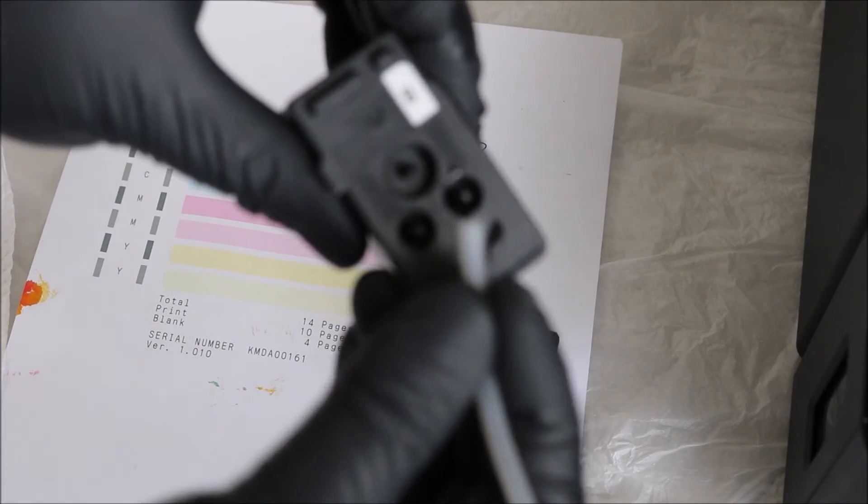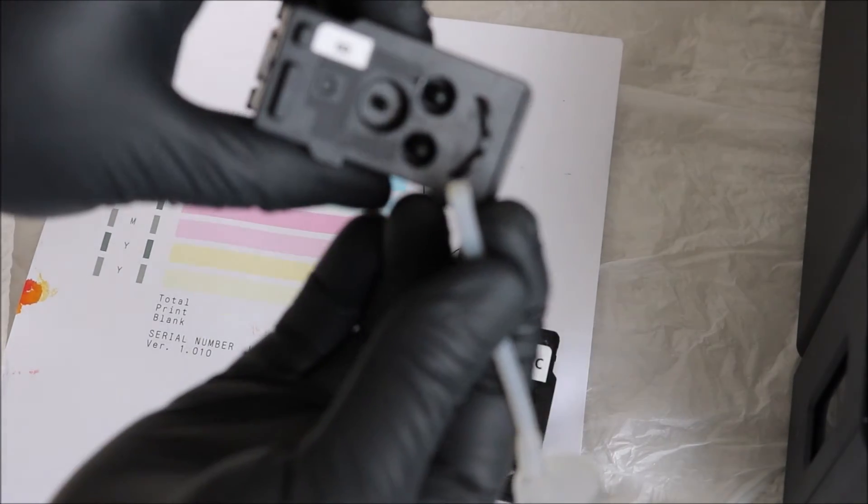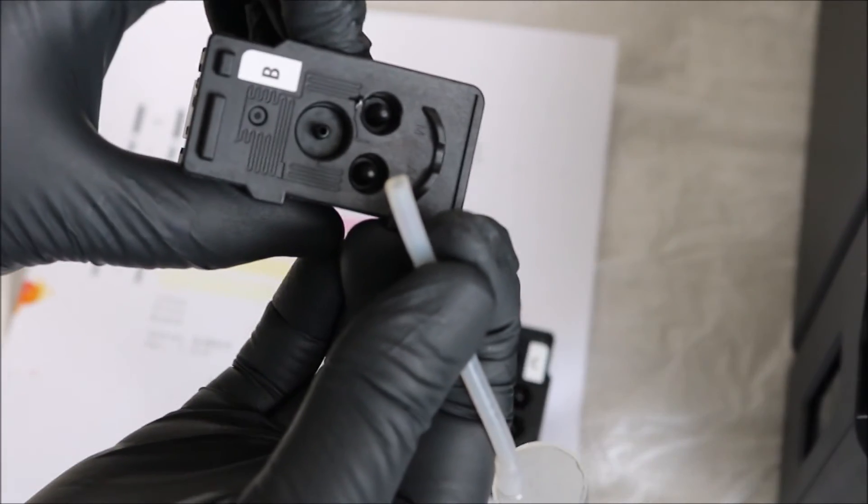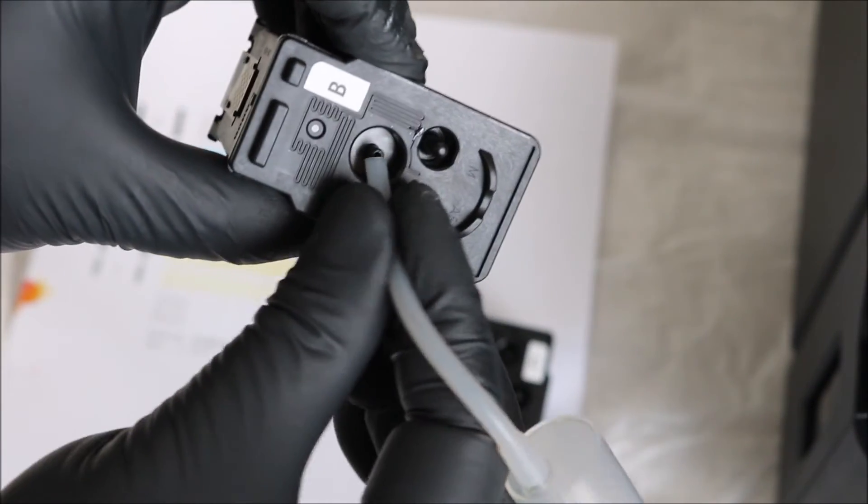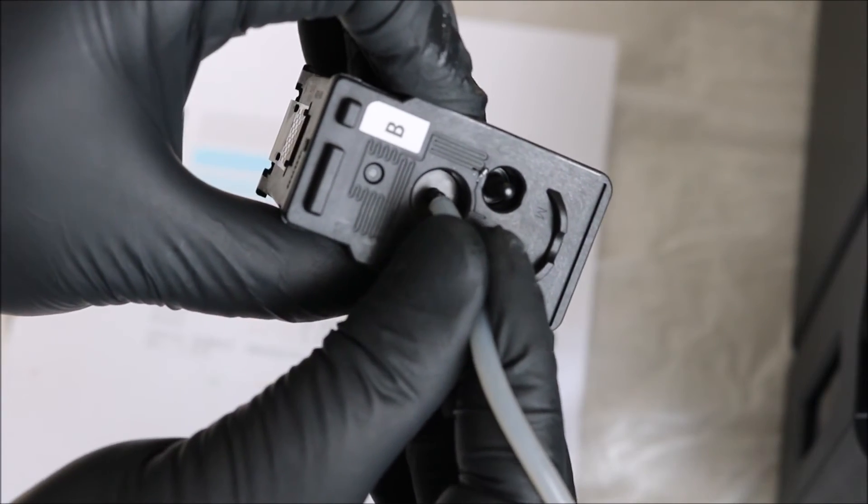So the black one is very, very simple. It's just one nozzle and the one nozzle is going to be black. And again, you can do the same process with the black print head. It's the exact same thing, if not easier. You're just attaching it there.